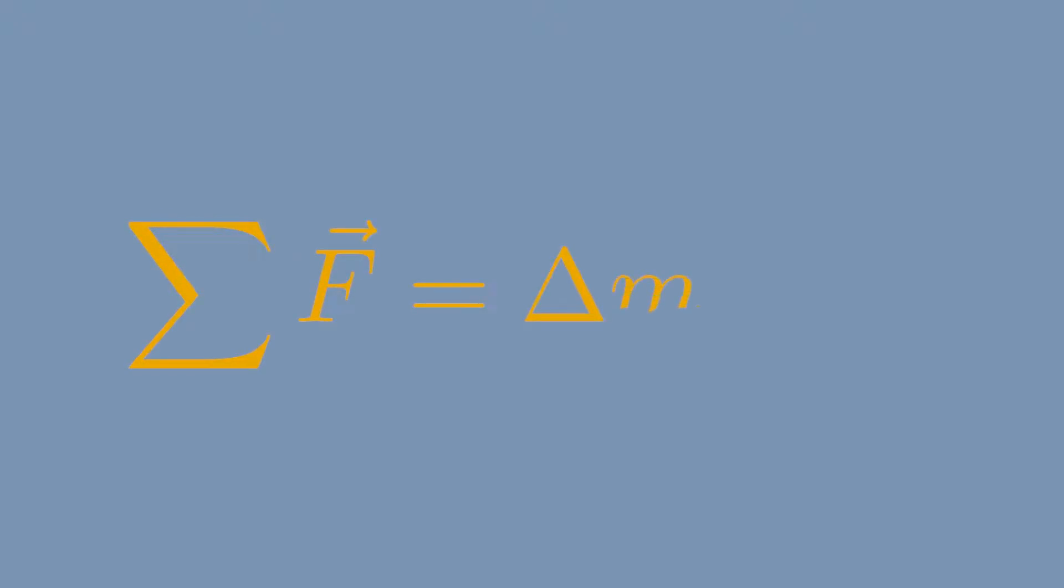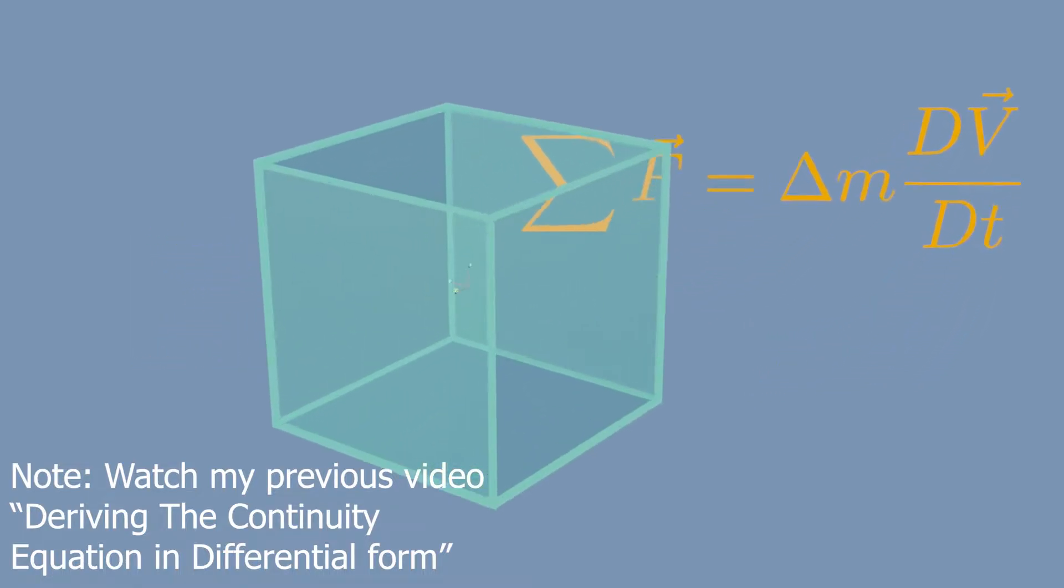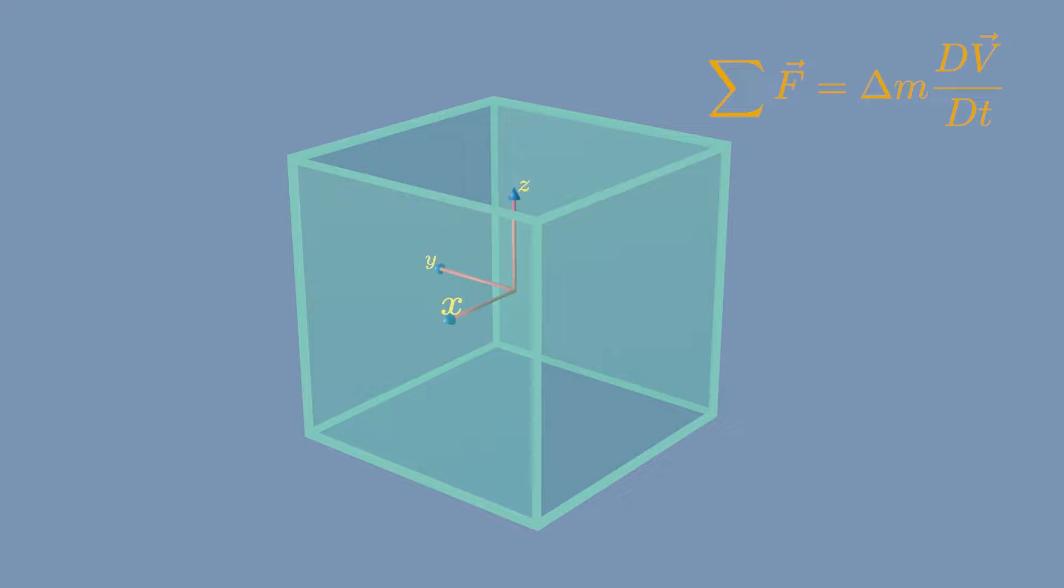Now, in order to get the equations of motion for a fluid particle, we will apply Newton's second law of motion to a differential fluid element and express the result in its most general form.